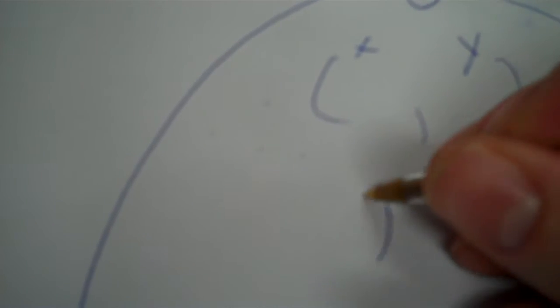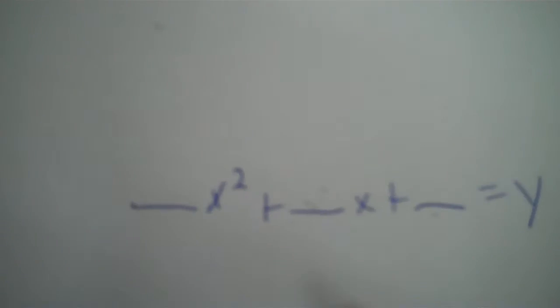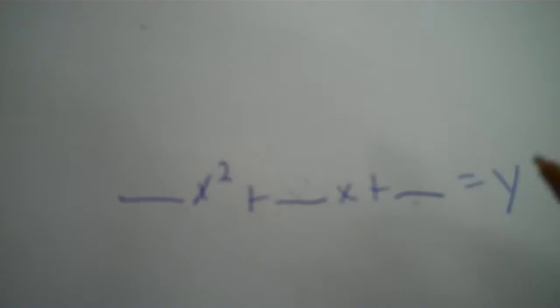You're finding the vertex when you find the maximum. Make an XY coordinate, and the way you find the X is by applying the formula: opposite of B divided by two times A. So we know we need X squared, then X, then the constant equals Y. And I can start filling that out right away because it's gravity.